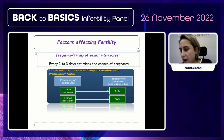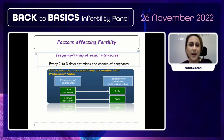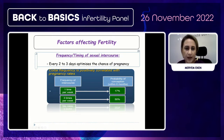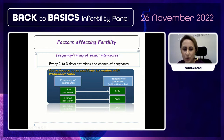Many of our patients ask about the frequency or timing of sexual intercourse. Every two or three days optimizes the chance of pregnancy. If the frequency of intercourse is once per week, the probability of conception within six months is 18%, but three times per week it is 50%. The optimal sexual intercourse frequency is three times per week.